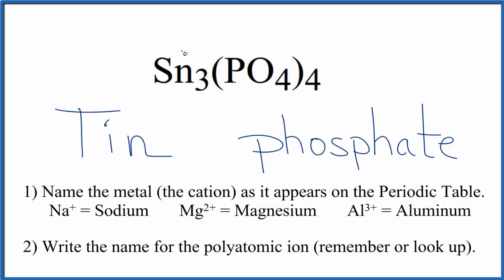But tin is a transition metal, so we need to write the charge on the tin here between the two names. We know that the whole phosphate ion is three minus, and we have four of them. So four times three minus, that gives us twelve minus.